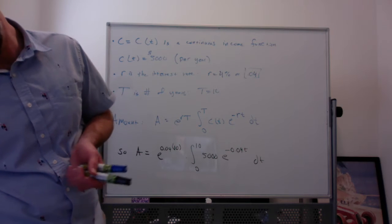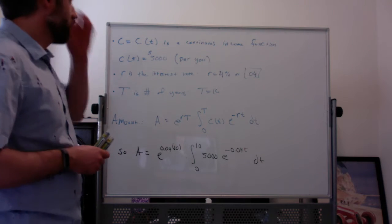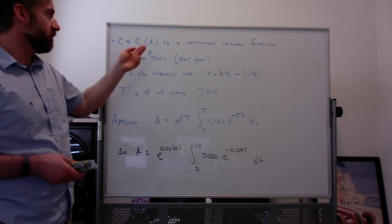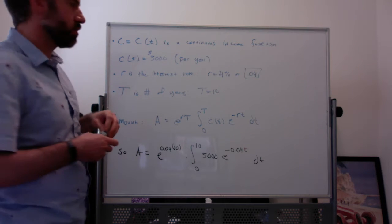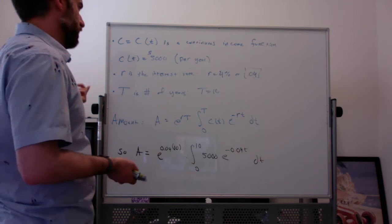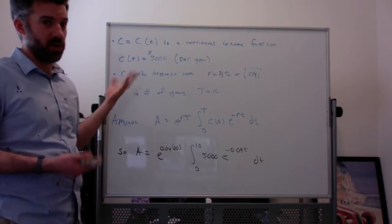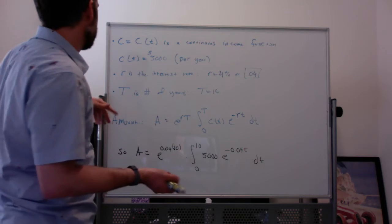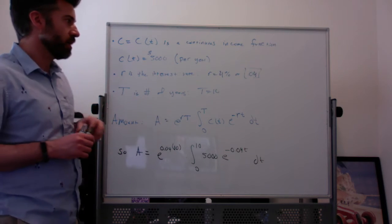There's a formula for annuities. It basically says if C or CFT is a continuous income function, in most of the problems we've seen or that I've seen from you guys, it's just some constant amount like $5,000 per year or $9,000 per year. R is the interest rate as a decimal,